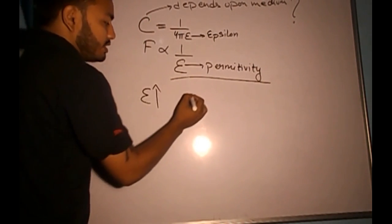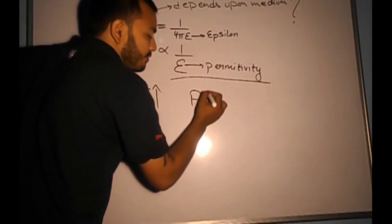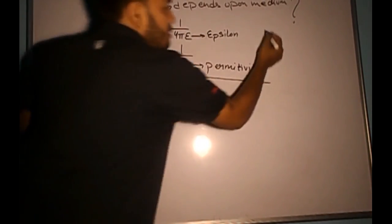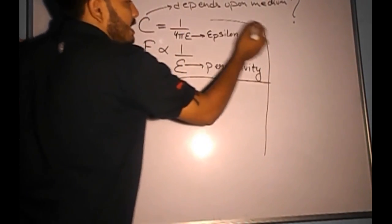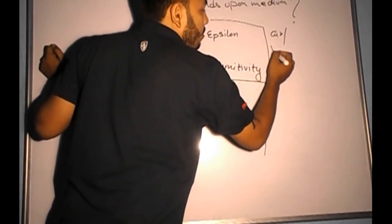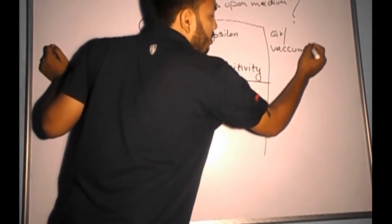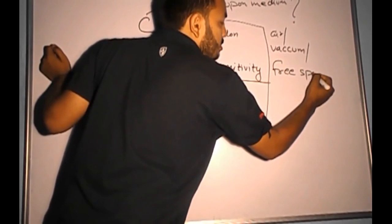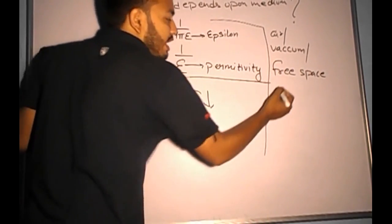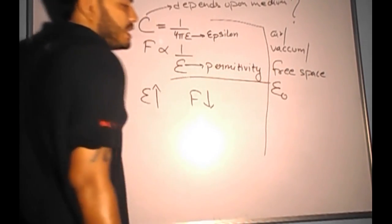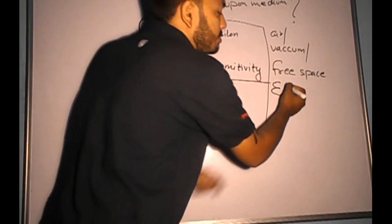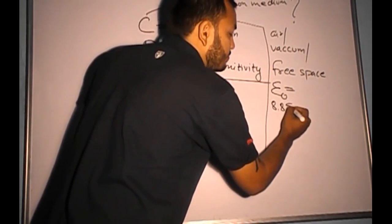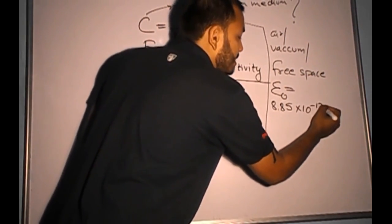Higher the permittivity, lesser is the force between the two charges. For the most widely used medium — air, vacuum, or free space — the value of permittivity is denoted by ε₀ (epsilon naught), where the naught denotes the absence of any medium. Its value is 8.85 × 10⁻¹².